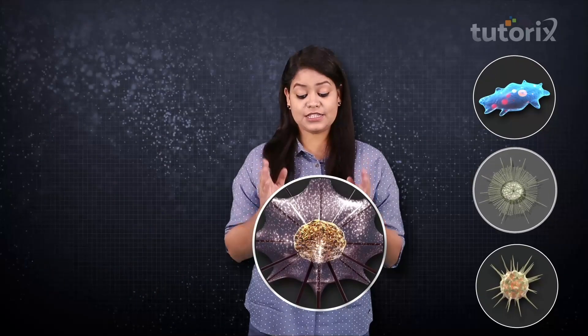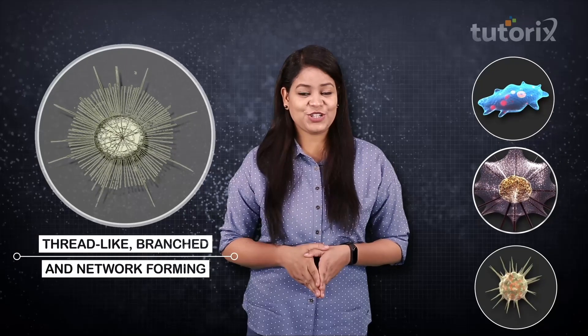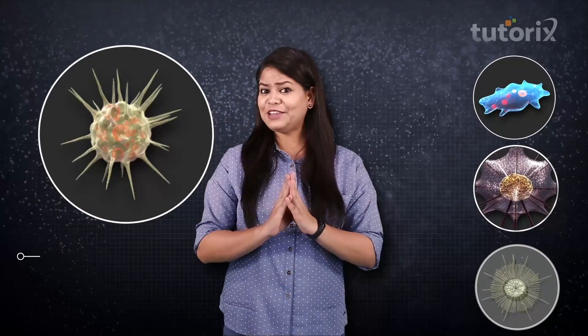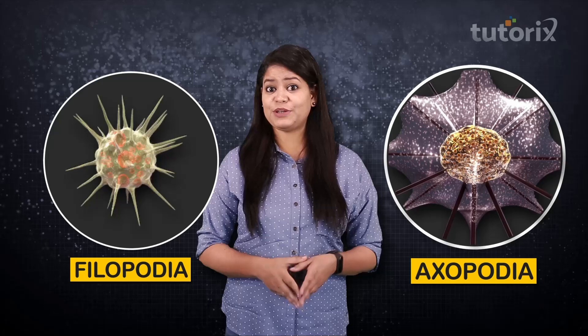The first group has pseudopodia that are blunt and broad, known as lobopodia. The second group has pseudopodia that are sharp and pointed but with axial support, known as axopodia. The third group has pseudopodia that are narrow, thread-like, and branched, forming a network, known as reticulopodia. The fourth group has fine, thread-like, sharp, and pointed pseudopodia known as filopodia. The difference between axopodia and filopodia is that filopodia do not have axial support, unlike axopodia.